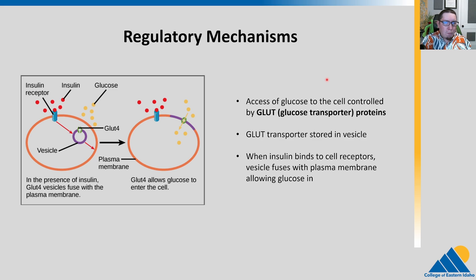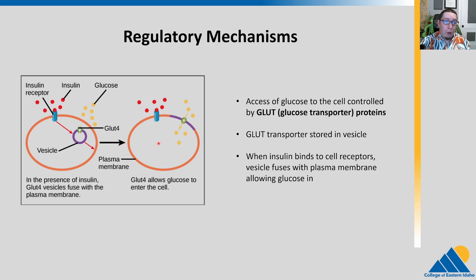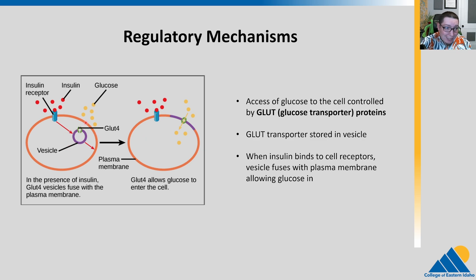I'm going to talk about some specifics here — don't get too deep in the weeds, but I just want to show you some of the things you might be interested in later in your biological career. Here's a great regulatory mechanism that looks at how we basically control the access of glucose to the cell. In the cell, there are transporters called glucose transport proteins, or GLUTs. The more GLUTs you have in the cell membrane, the more you can transport. If you have very few GLUTs in the cell membrane, glucose is not going to go into that cell at a high rate. GLUT proteins are stored in vesicles and when they are needed, they can move to the membrane and allow the transport of glucose.